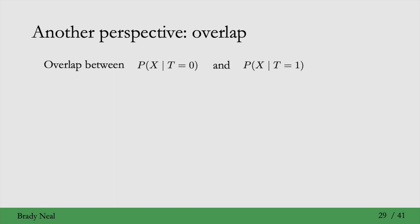So these conditional distributions look a lot like the positivity assumption, but the variables are flipped. We used to have conditional of T given x, and now it's conditional of x given T. But everything's related through Bayes' rule.